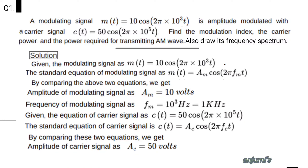In this problem, they have given the modulating signal and carrier signal directly. So we can write the solution: modulating signal M(t) = 10 cos(2π × 10³t). This equation we can compare with the standard equation of modulating signal: M(t) = AM cos(2π fm t). By comparing the above two equations, we get amplitude of modulating signal AM = 10 volts, and frequency of modulating signal fm = 10³ Hz, that is equal to 1 kHz.